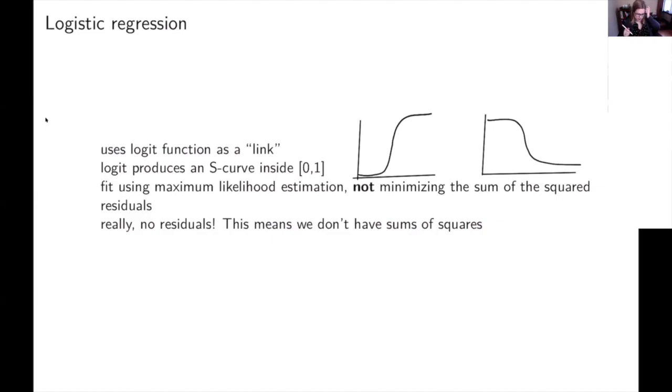I didn't want to focus on that this week. But this basically means we don't have sums of squares. We don't have an R-squared value for a logistic regression model. And like I said, we can't minimize the sum of the squared residuals to find the best fit line.